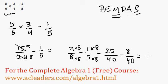So 25 minus 8, 17. And all over 40. That's it. 17 over 40, final answer.